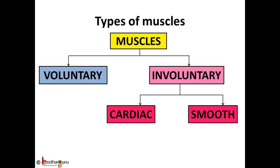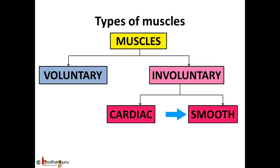In a nutshell, muscles can be divided into two categories: voluntary and involuntary muscles. The involuntary muscles are of two types: cardiac, that is heart muscles, which are striped and branched, and smooth muscles like those in our stomach and intestines, which do not have any stripes.